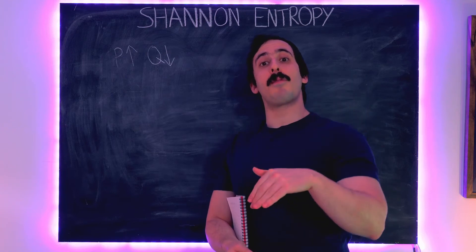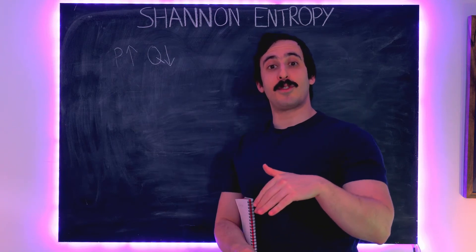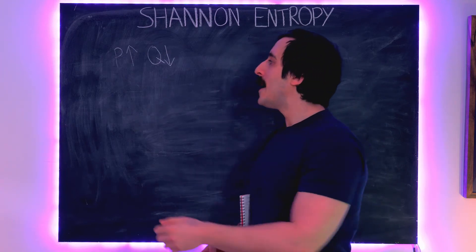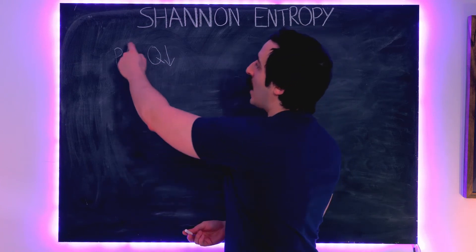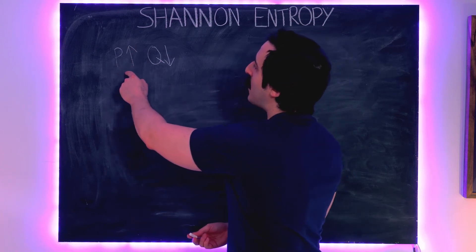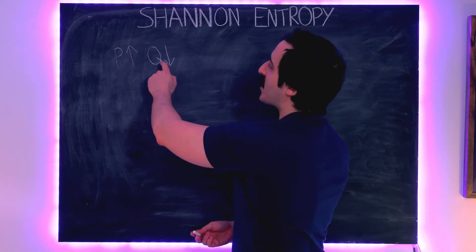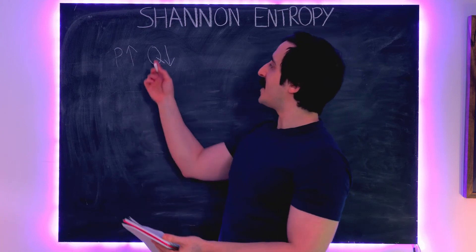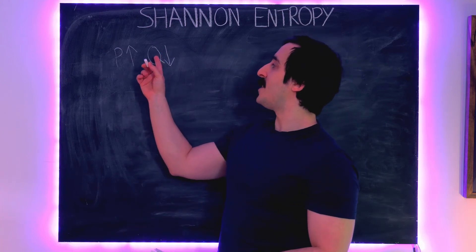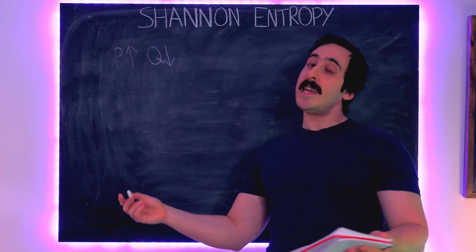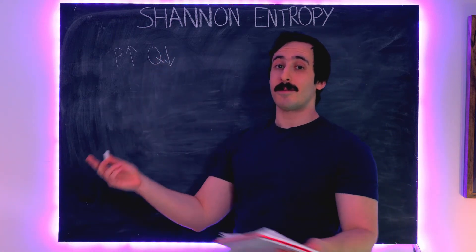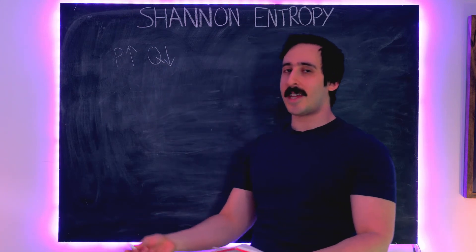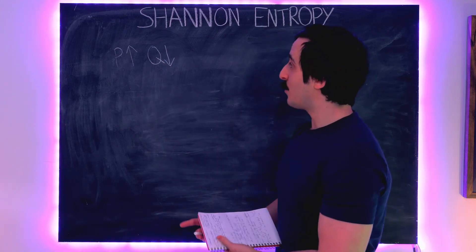Whereas a statement with a much lower probability, like 'Alice was born on the 15th of a month,' has a much higher information content. Note: in previous videos we used Q to represent heat, but Q is also the symbol used to represent information content.